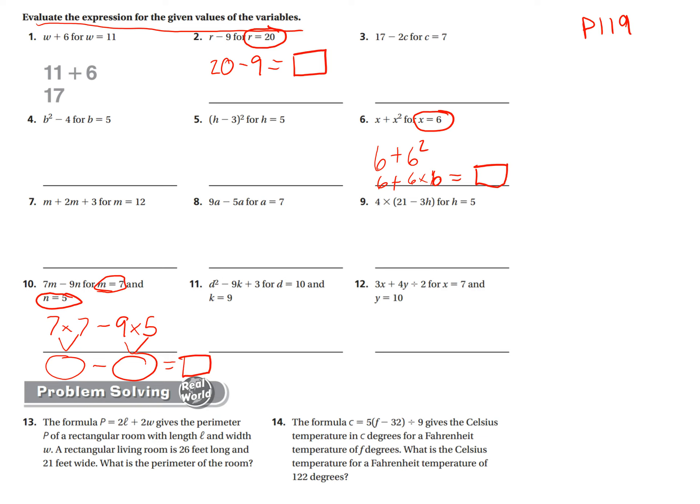Okay. I'll let you try that on 11. I'll jump over. I will set up 12 for you as well. So again, x is 7. Y is 10. So 3. And it's got the x right next to it. So times 7. Because instead of x, I put 7. Plus 4. And then it's going to be times 10. Divided by 2.